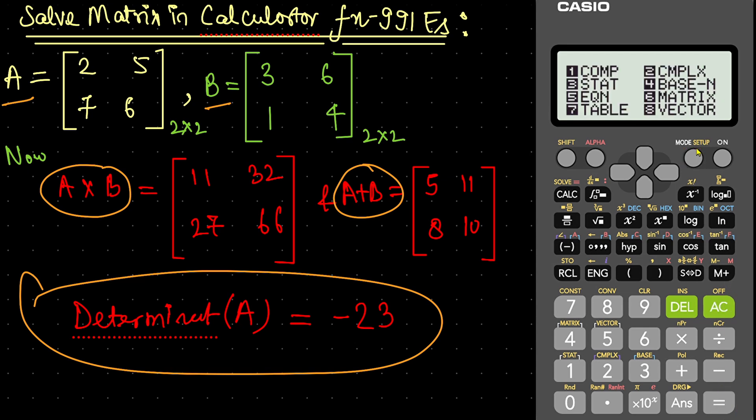Again, go to mode. Then select matrix. Then this time feed matrix B into the calculator memory. Press 2. It is 2 into 2 matrix. Press 5. Now, feed the B matrix. 3 equals, 6 equals, 1 equals, 5 equals. Now, press again AC.